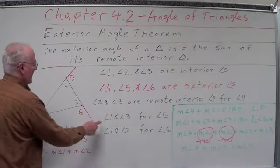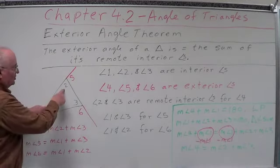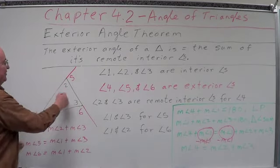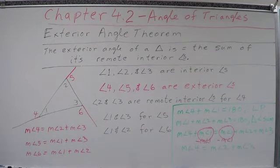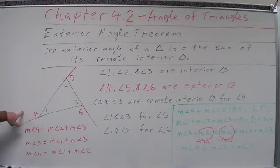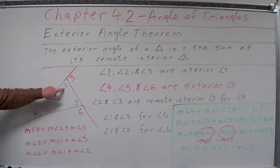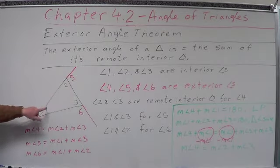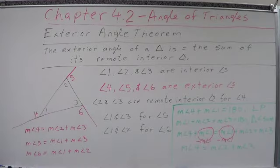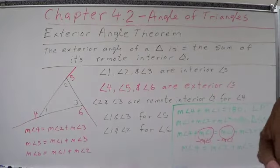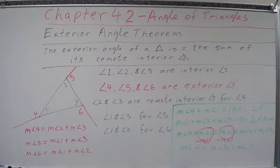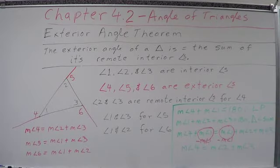The remote interior angles are the ones opposite — not forming a linear pair with the exterior angle. So: the measure of angle 4 equals the measure of angle 2 plus the measure of angle 3; the measure of angle 5 equals the measure of angle 1 plus the measure of angle 3; and the measure of angle 6 equals the measure of angle 1 plus the measure of angle 2. Let's look at a simple outline of this proof — and be ready to prove this on a quiz.